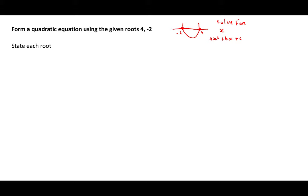When we want to form a quadratic equation using the roots, the first thing we do is state each root. Our roots are x equals 4 and x equals minus 2. We then find the corresponding factor of each root. This means we bring our value and our x to the same side of the equal sign. Bringing the 4 across and the minus 2 across the equal sign gives us x minus 4 and x plus 2.